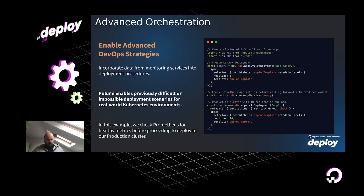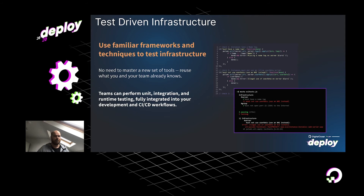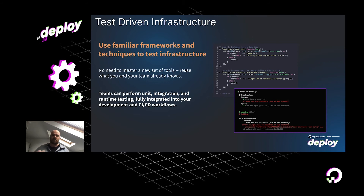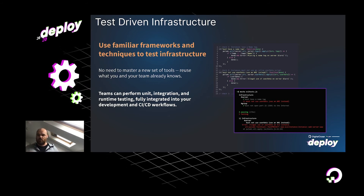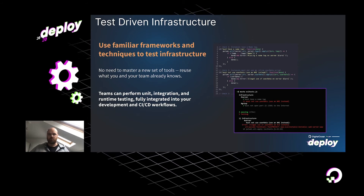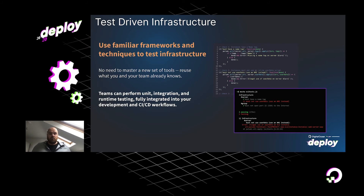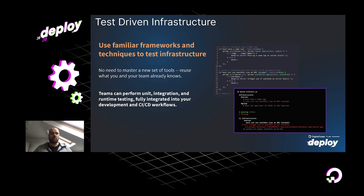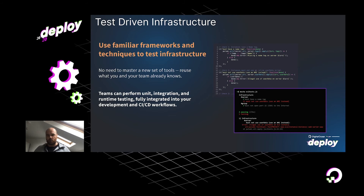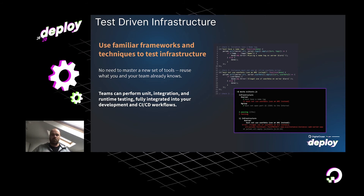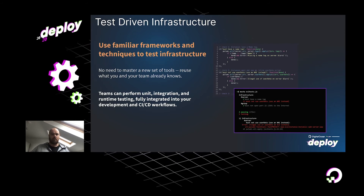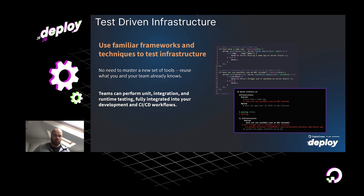Pulumi is starting to move us towards infrastructure as software — modern infrastructure as code that backs up real teams and how real software works. One of the ways we do that is by introducing test-driven infrastructure into our development. We give you different ways to adopt the testing pyramid: unit testing, integration testing, and runtime testing, all embedded as part of your CI/CD workflow. This lets us actually test the code we're writing, rather than just hoping the application works as expected after deployment.